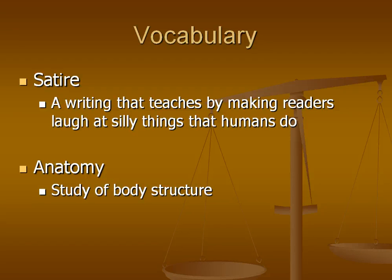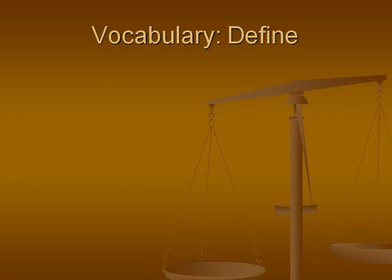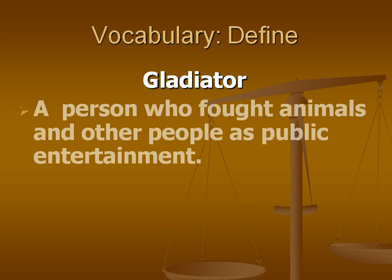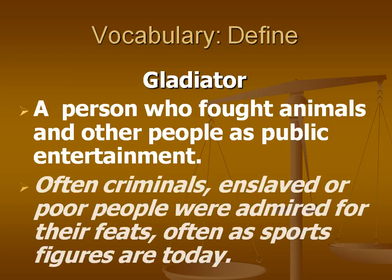Anatomy is simply the study of body structure. A gladiator is a person who fought animals and other people as public entertainment. Typically, criminals, enslaved, or poor people were the ones who would end up being gladiators. They were admired for their feats, just like sports figures today are admired for their accomplishments in the athletic arena. However, sports figures today choose to go into this — most gladiators did not choose their profession.